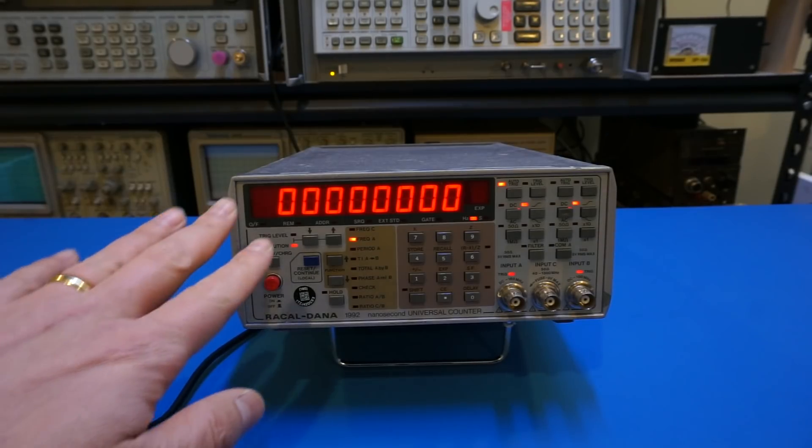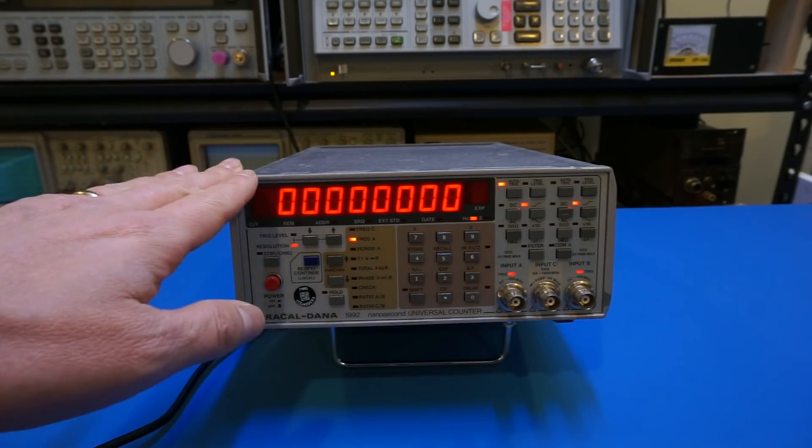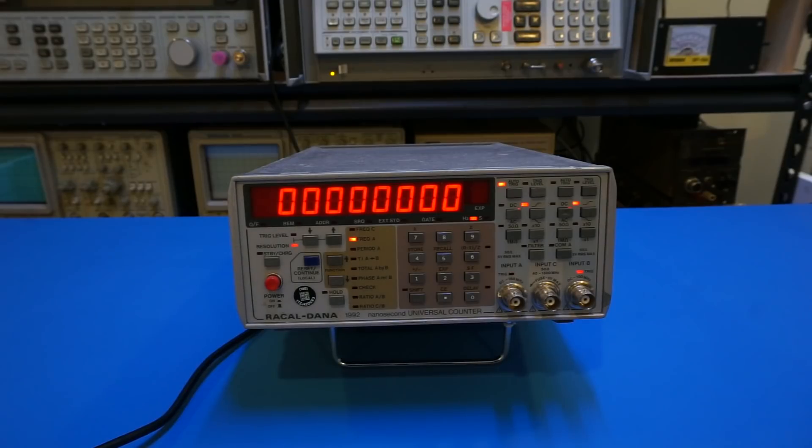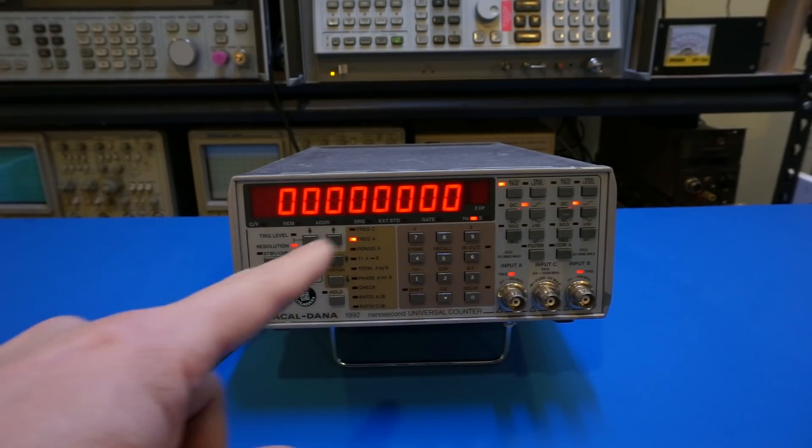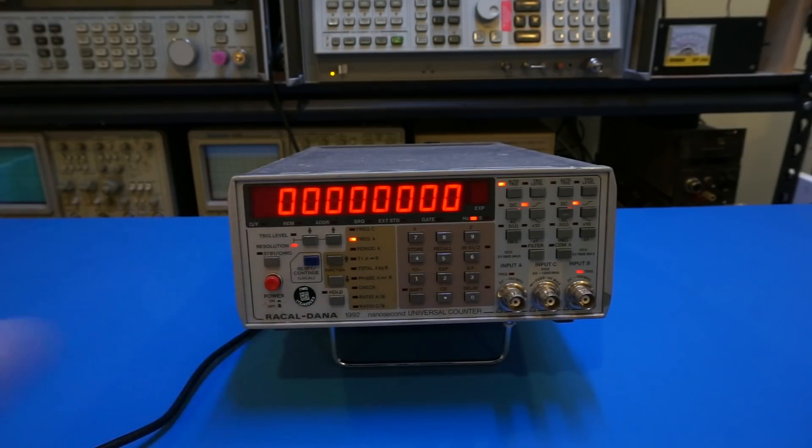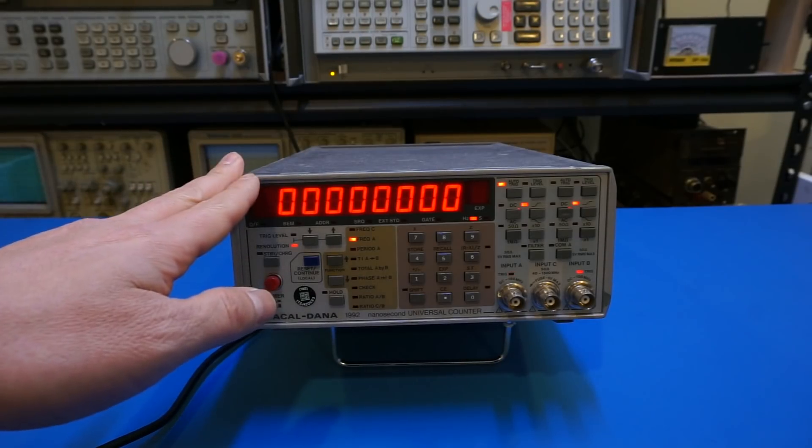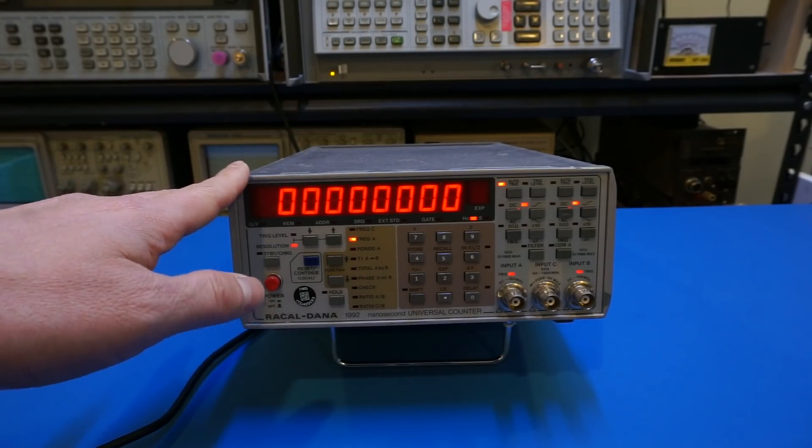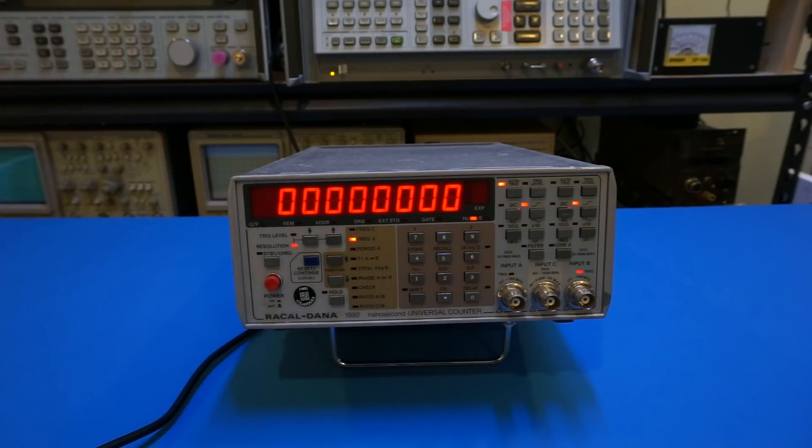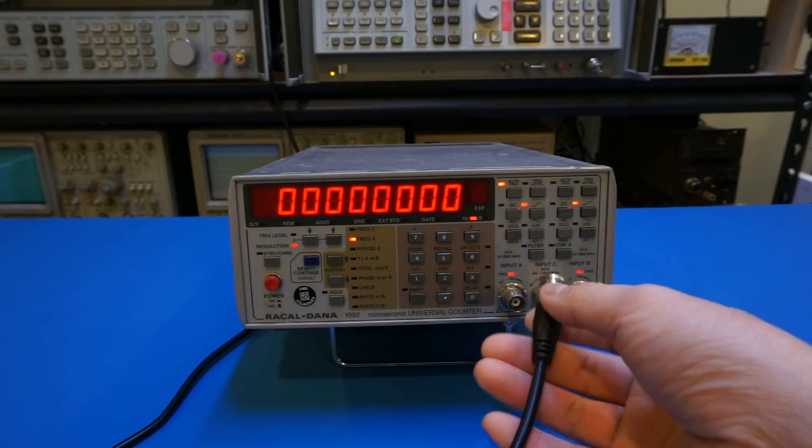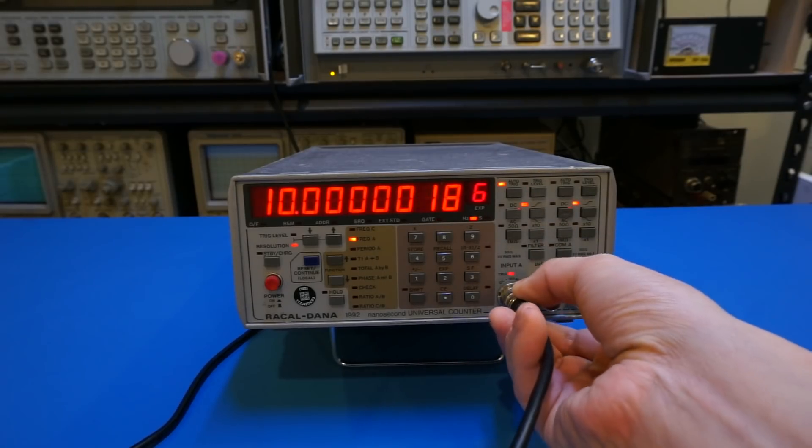And also, this frequency counter has a little bit higher resolution than the HP 5350B that I showed you earlier. It can, I think it has up to 1 MHz resolution, so we will see that in a bit. Nevertheless, I had left this powered on for quite some time, so the oven has already got a chance to stabilize. So now let's put in the Rubidium frequency's output, 10 MHz, into the input to see what we got.